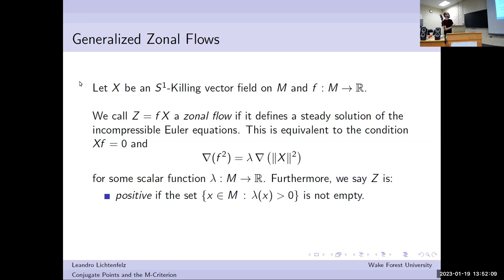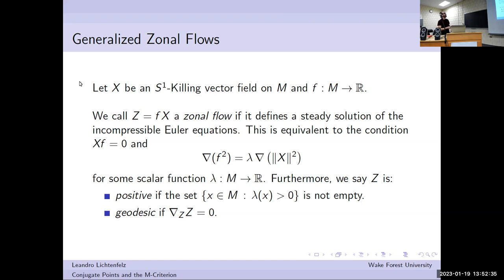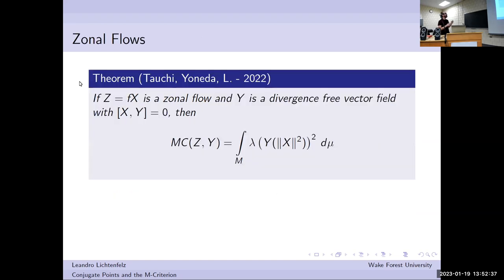Lambda can take any sign. I'll say one of these zonal flows is positive if the set where lambda is positive is at least non-empty — lambda doesn't have to be always positive, just positive somewhere. I'll say z is geodesic if nabla_z z equals zero. For this class of zonal flows, we show that the M criterion simplifies unexpectedly a lot.